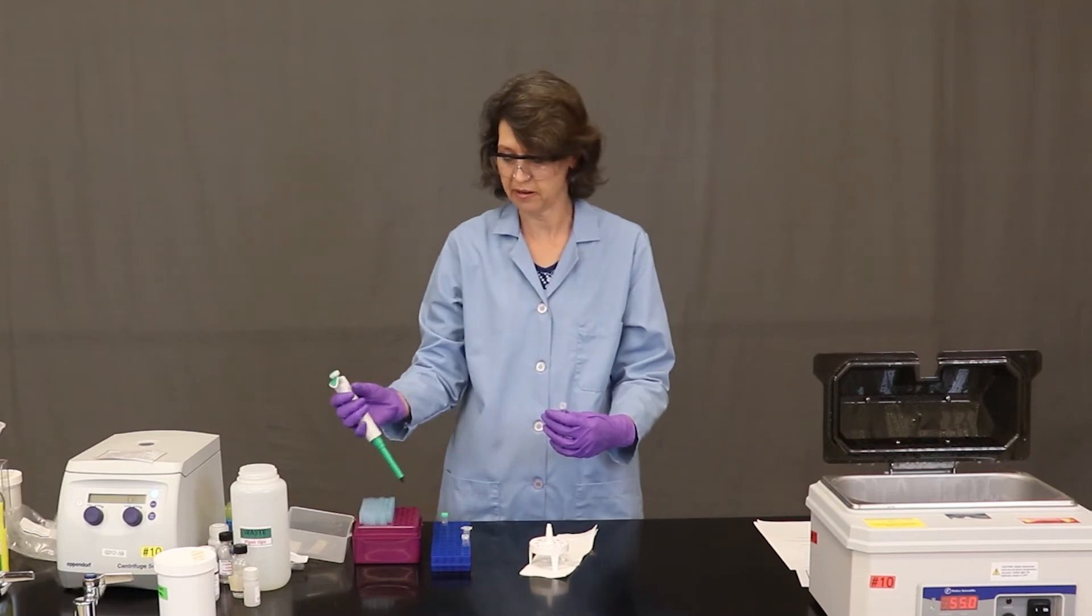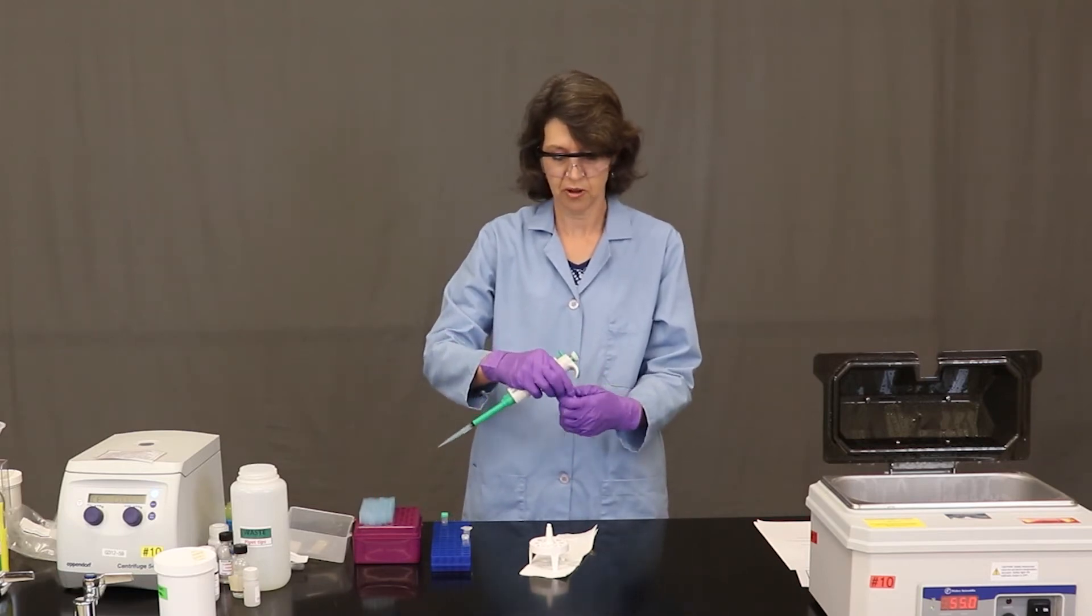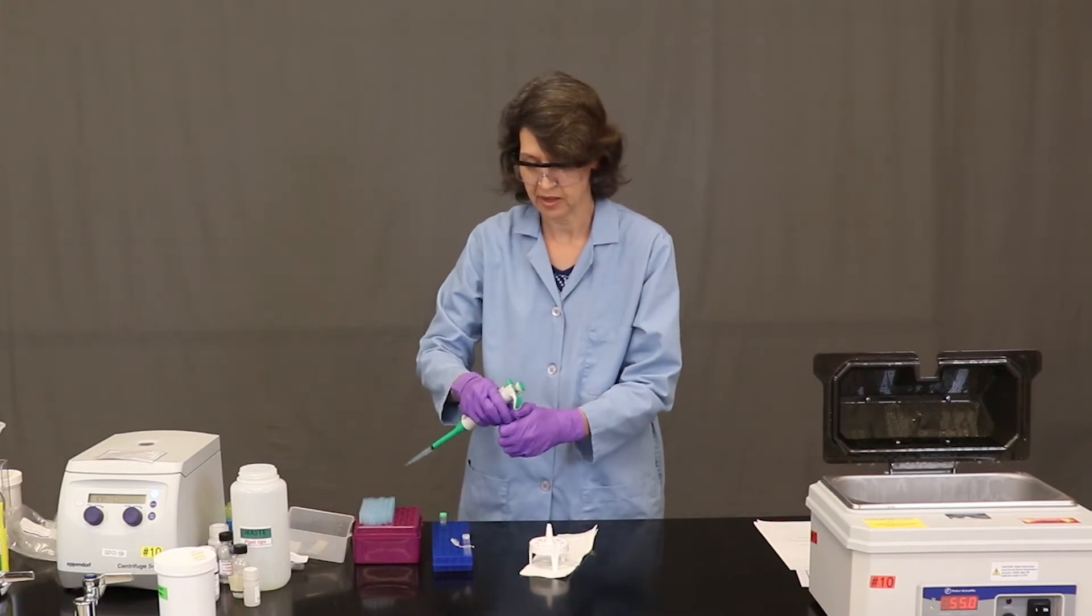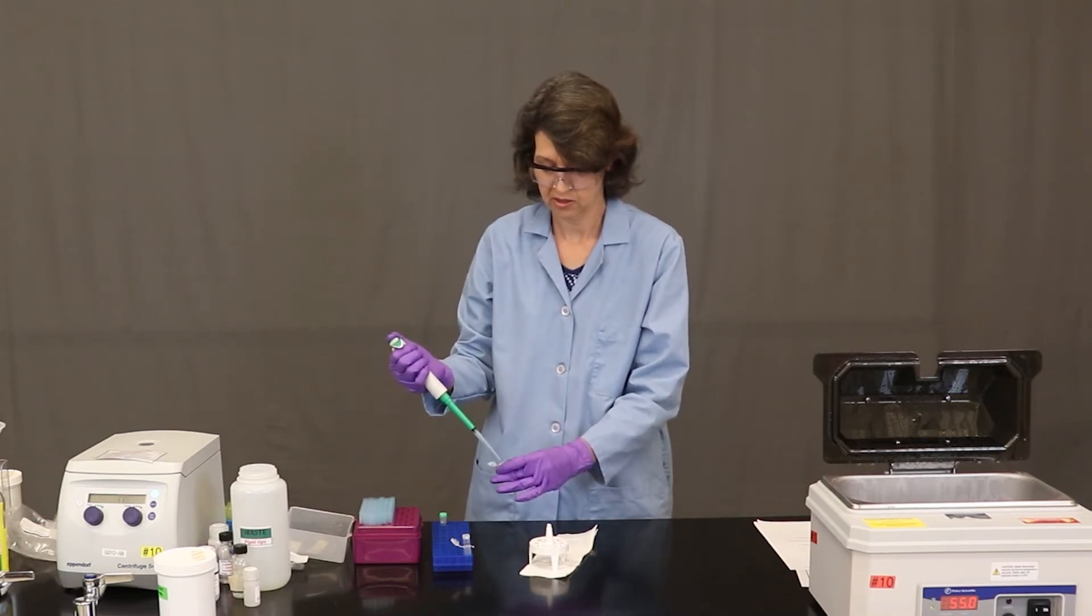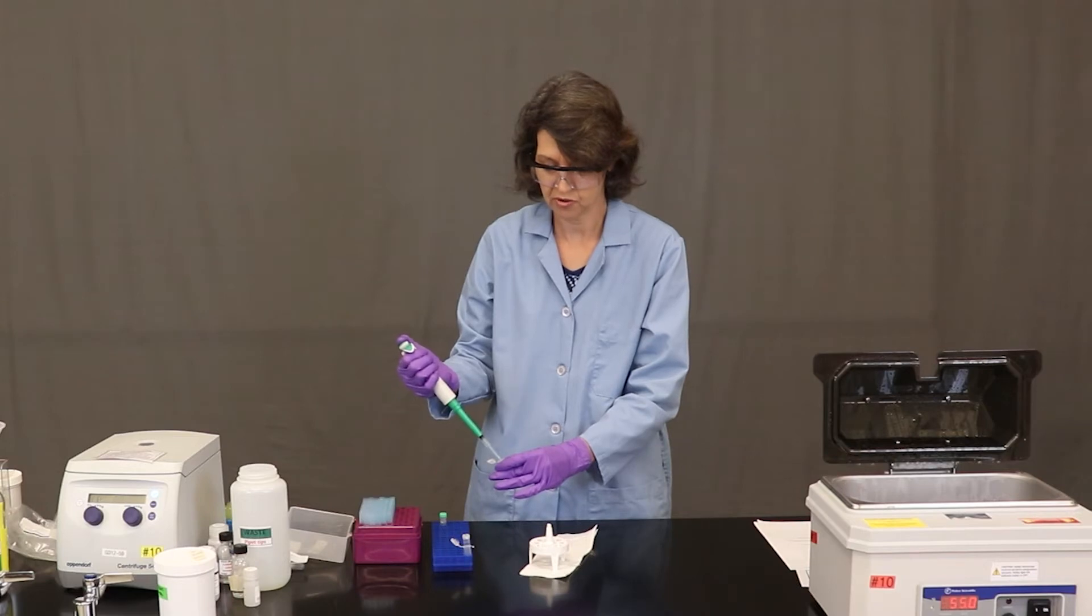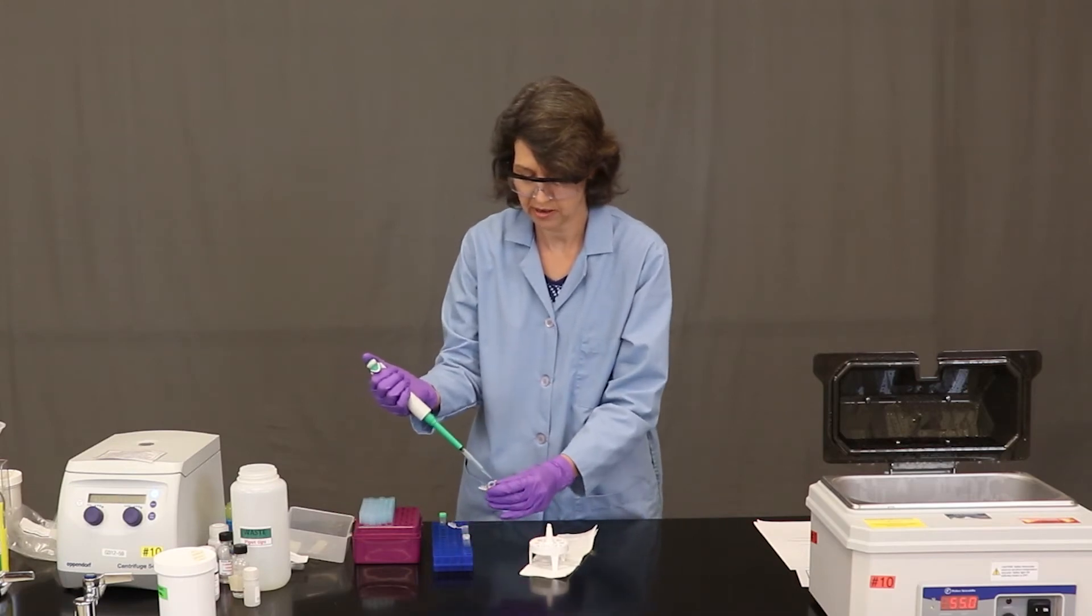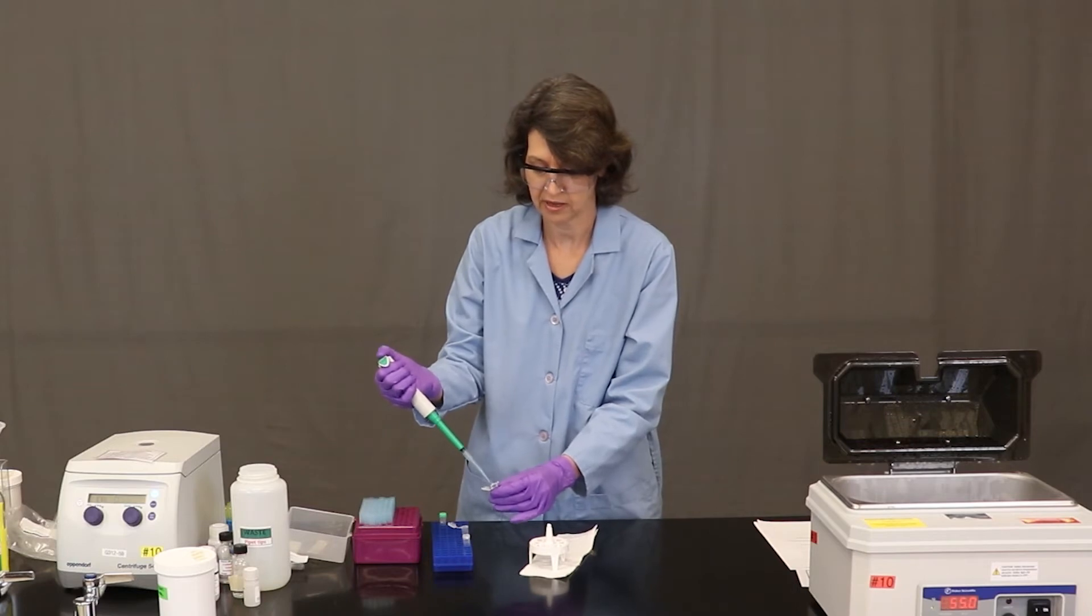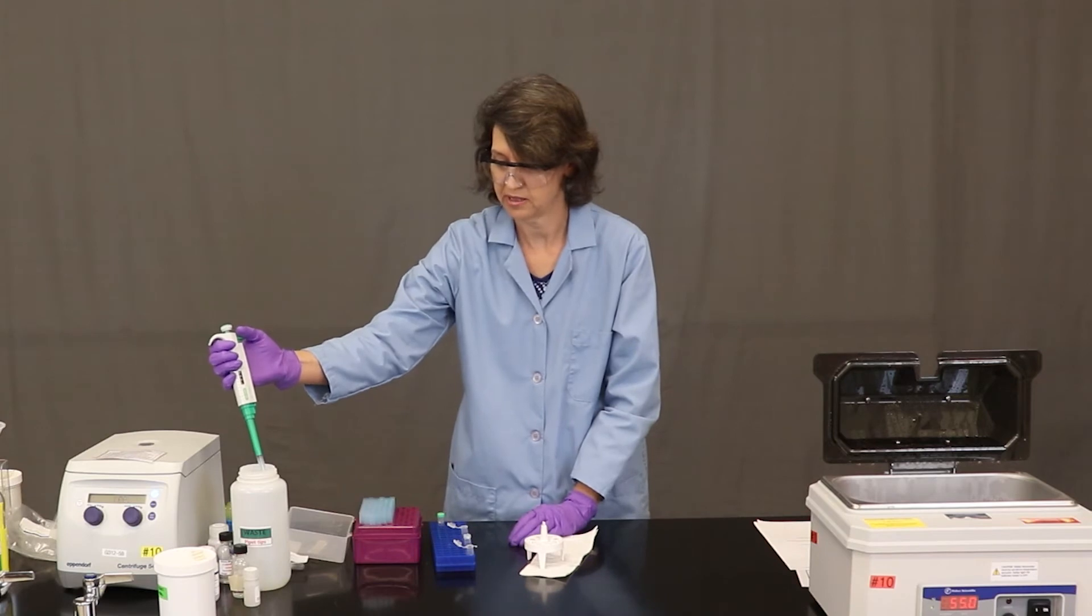So I'm adding a larger volume of solution this time. So I've got a larger micropipettor. This one is going to measure 200 microliters. And I've got larger tips. So I'm going to add first the 200 microliters of buffer. And so I'm pushing down to that first stop, drawing up the solution. And then I'm going to add it to my microfuge tube, push the last stop so I can get that last drop out.